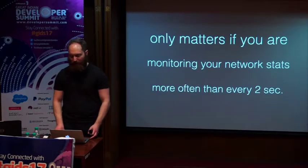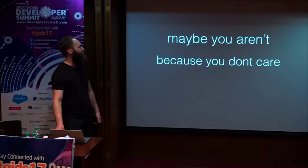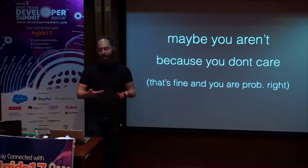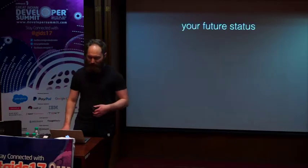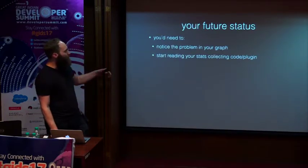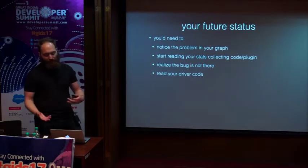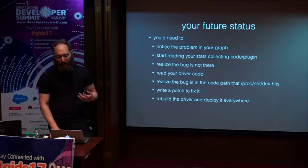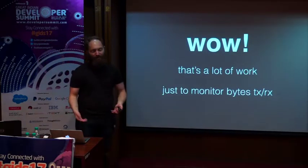This bug only really matters if you're monitoring your network stats more often than every two seconds. Maybe you aren't doing that, maybe it's not important to you. But if you are one of those people who do need statistics at that freshness, to fix this bug you would need to: notice there's a problem in your graph, read all your stats-collecting code in Munin, CollectD, or Nagios, realize the bug is not in that code, read the device driver code, realize the bug is in the driver, write a patch, rebuild the driver, and so on. That's a huge amount of work just to figure out how many bytes were received or sent from your computer.